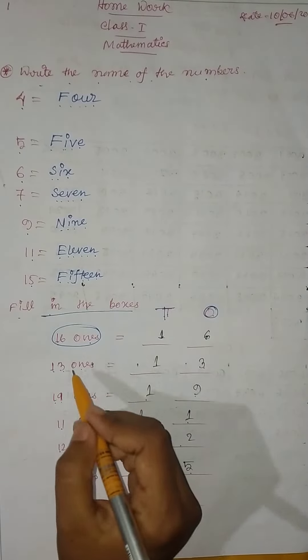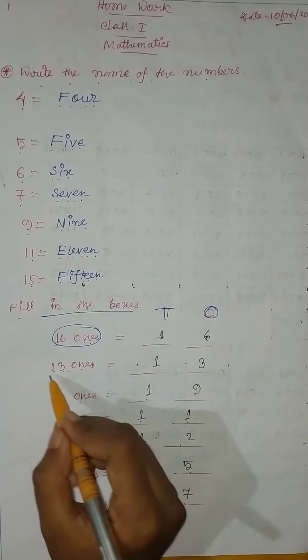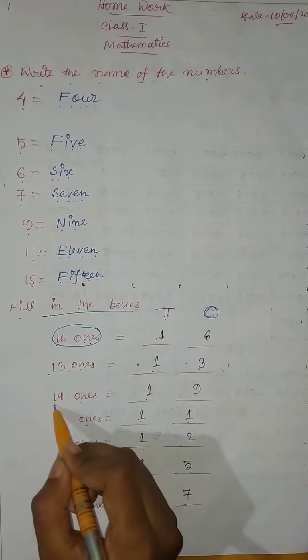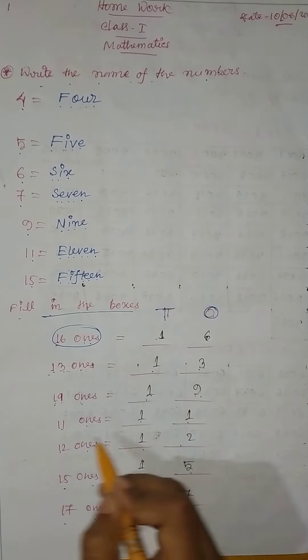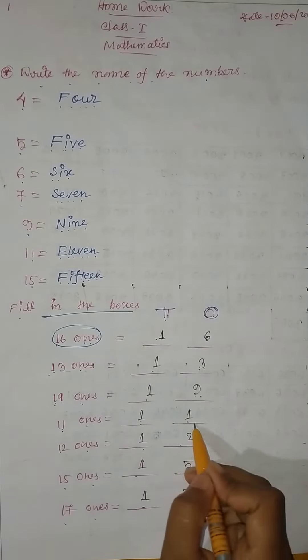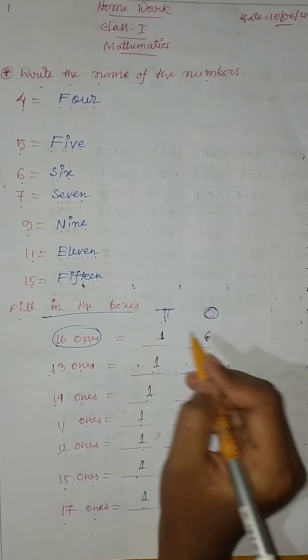So, 16 ones: 1, 6. 13 ones: 1, 3. 19 ones: 1, 9. 11 ones: 1, 1, here.